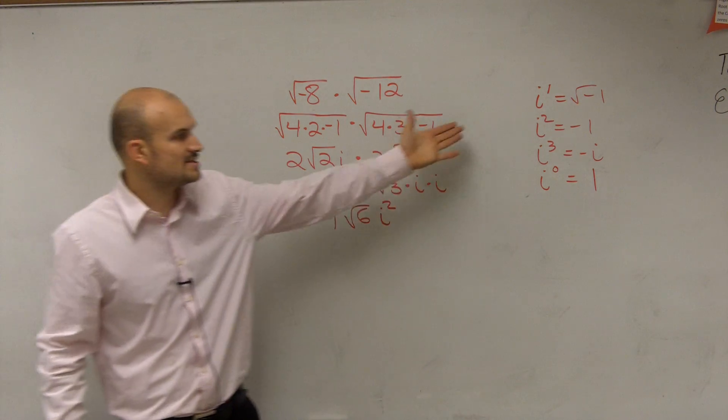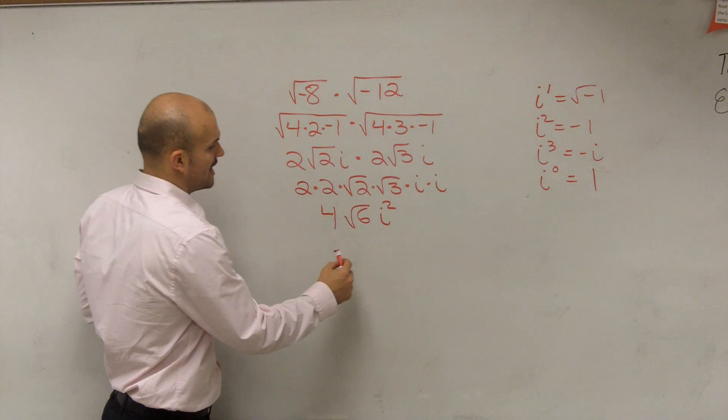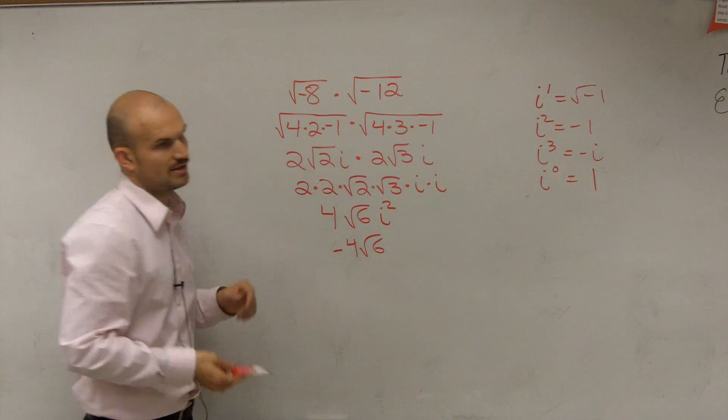But i squared represents negative 1, so therefore our answer is negative 4 square root of 6.